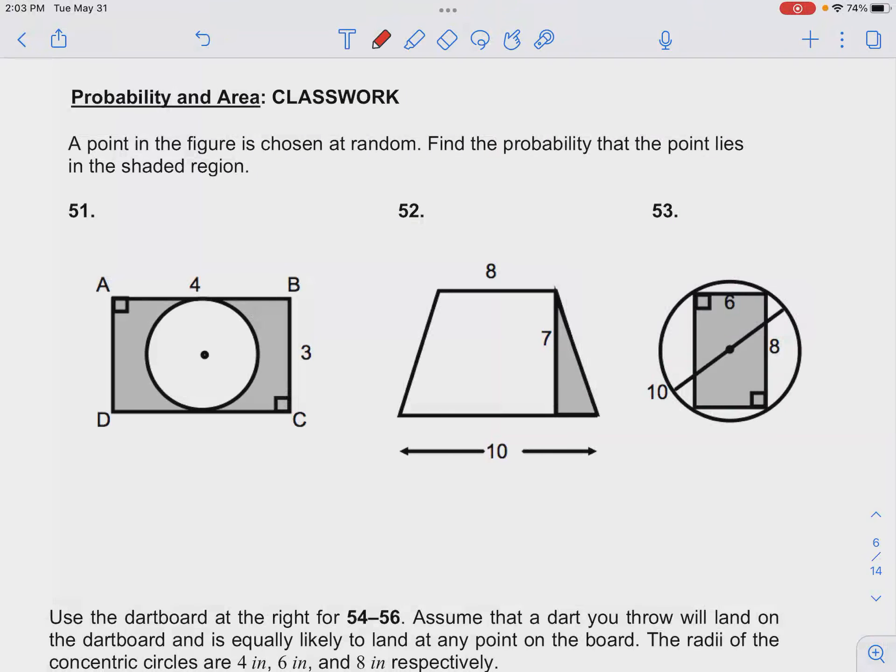Number 53 in your classwork for probability and area. We want to find the probability that a random point on the figure will also be in the shaded region.